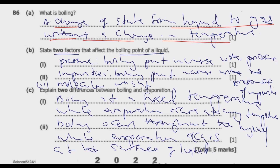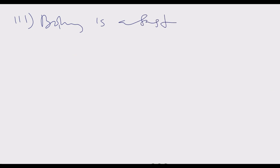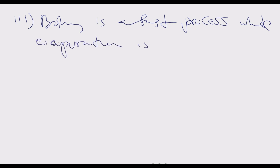That is why on the ocean, the ocean water level reduces because evaporation is taking place from the surface. These are the two key differences. Number three, in case you are asked to give more: boiling is a fast process because it takes place at a particular temperature, while evaporation is a slow process.